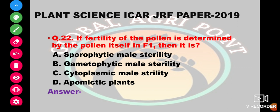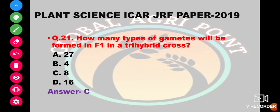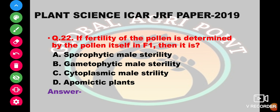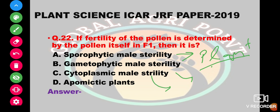If the fertility of pollen is determined by the pollen itself in F1, then it is sporophytic male sterility, gametophytic male sterility, cytoplasmic male sterility, or apomictic plants? When fertility is determined by the genotype of the plant itself, it is gametophytic. When determined by the pollen itself, it is sporophytic. When cytoplasm determines male fertility, it is cytoplasmic male sterility. When embryo is produced without fertilization, it is apomictic. So the answer is gametophytic male sterility.